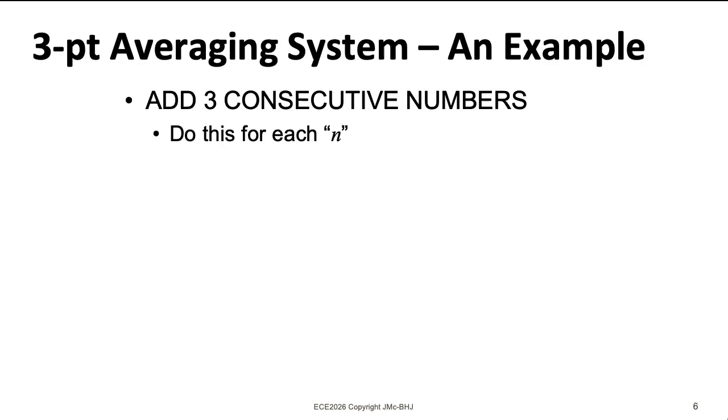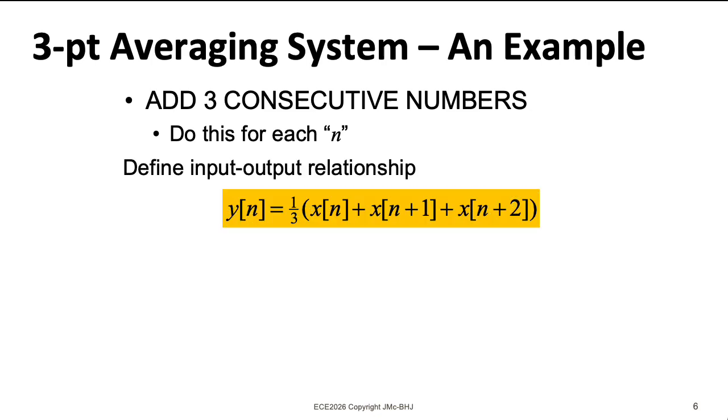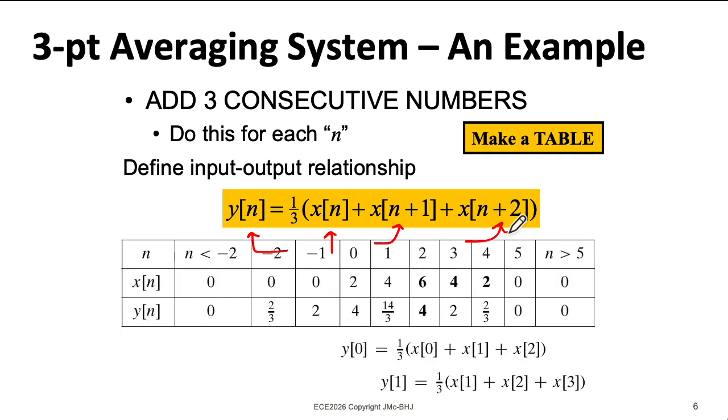Let's look at a system where we're going to add three consecutive inputs and divide by three. In this particular case, the system is looking into the future. In order to figure out the output y of n, I need the input x of n, but also x of n plus 1 and x of n plus 2. So this wouldn't work for a real-time system. This might be an algorithm you run on a set of data that you've collected and stored on a hard drive. To visualize what's going on, we can make a table like this.